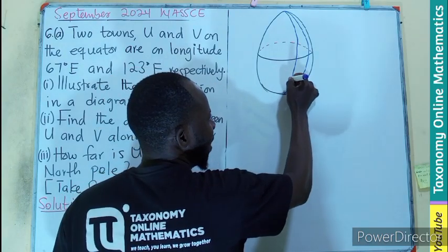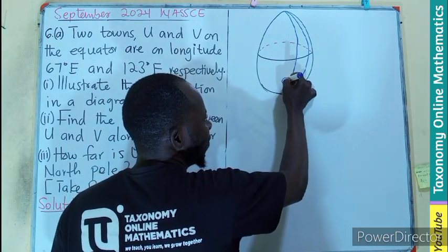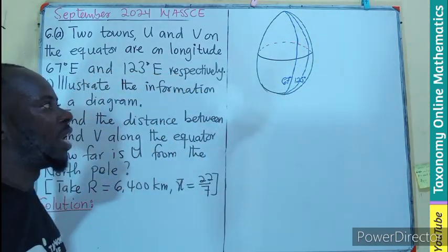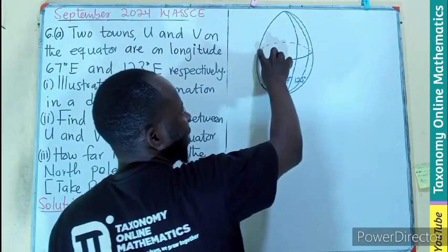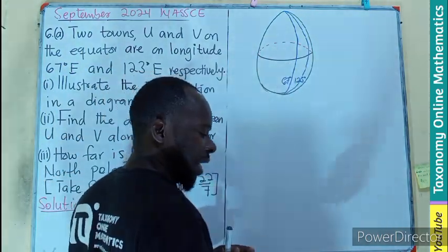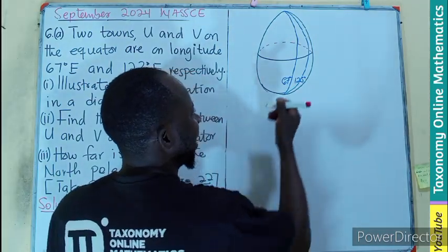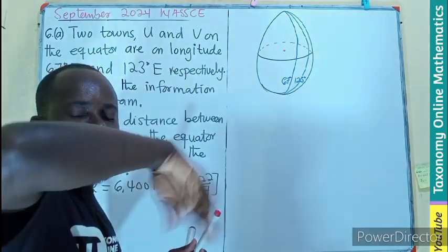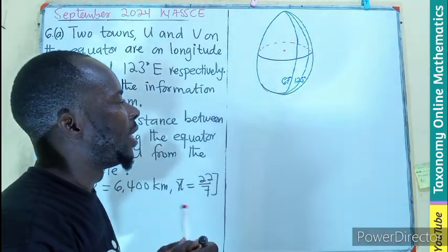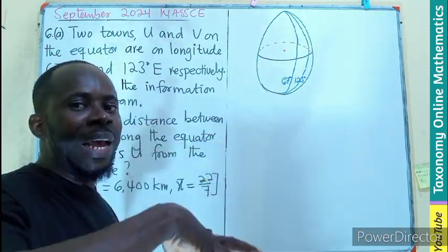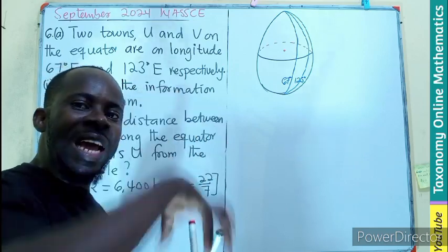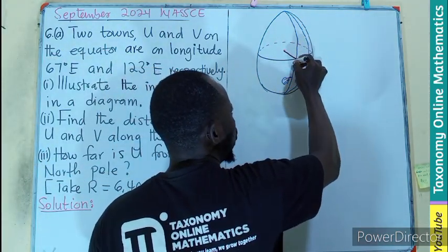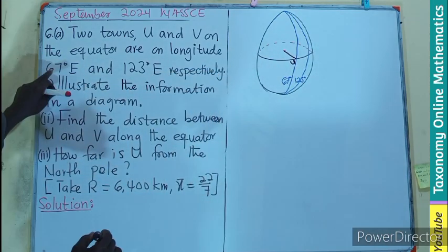This is going to be 67 degrees, and this will be 123 degrees, all to the east. Now, since this is the equator forming the circle, the center of that circle is going to be here. The center of the circle formed by the equator will be in there, and that will be a great circle. So that will be the center of the Earth itself. So the line from the center to U, that is the first one, U67.